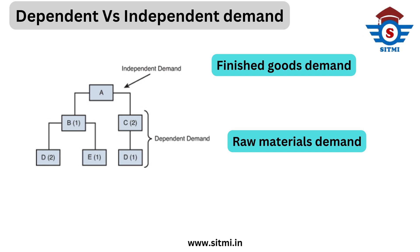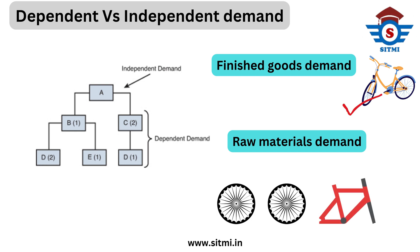For example, if we have to manufacture a bicycle, then the independent demand is the bicycle itself, and the dependent demands are the wheel, frame, spokes, tire, rim, and other components required to manufacture the bicycle. That's the basic difference between dependent and independent demand.